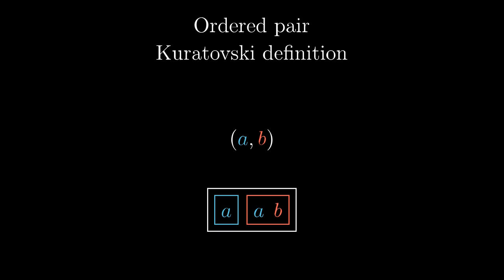First, consider the case when both elements are the same, so we are encoding the pair A, A. A set cannot contain one element twice, so the two A's in the second set are merged into one. Now also the two singleton sets are merged into one, so the ordered pair is the singleton set containing the singleton set containing A.